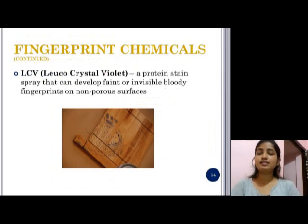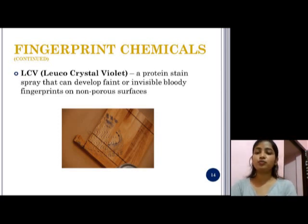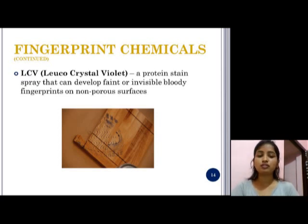The next method is LCV, or Leuco Crystal Violet. It is a protein stain spray that can develop faint or invisible bloody fingerprints on non-porous surfaces. LCV is a coloring reagent for blood based on the blood-catalyzed reaction of hydrogen peroxide with LCV, whereby the colorless LCV is oxidized to purple crystal violet.